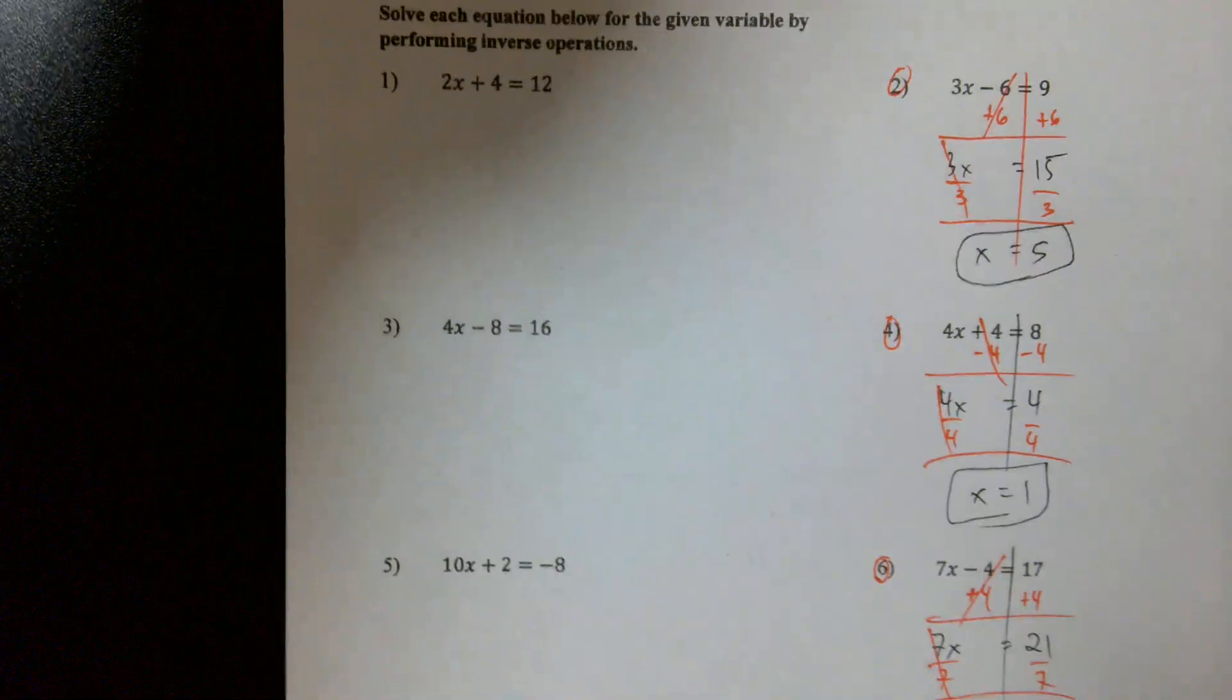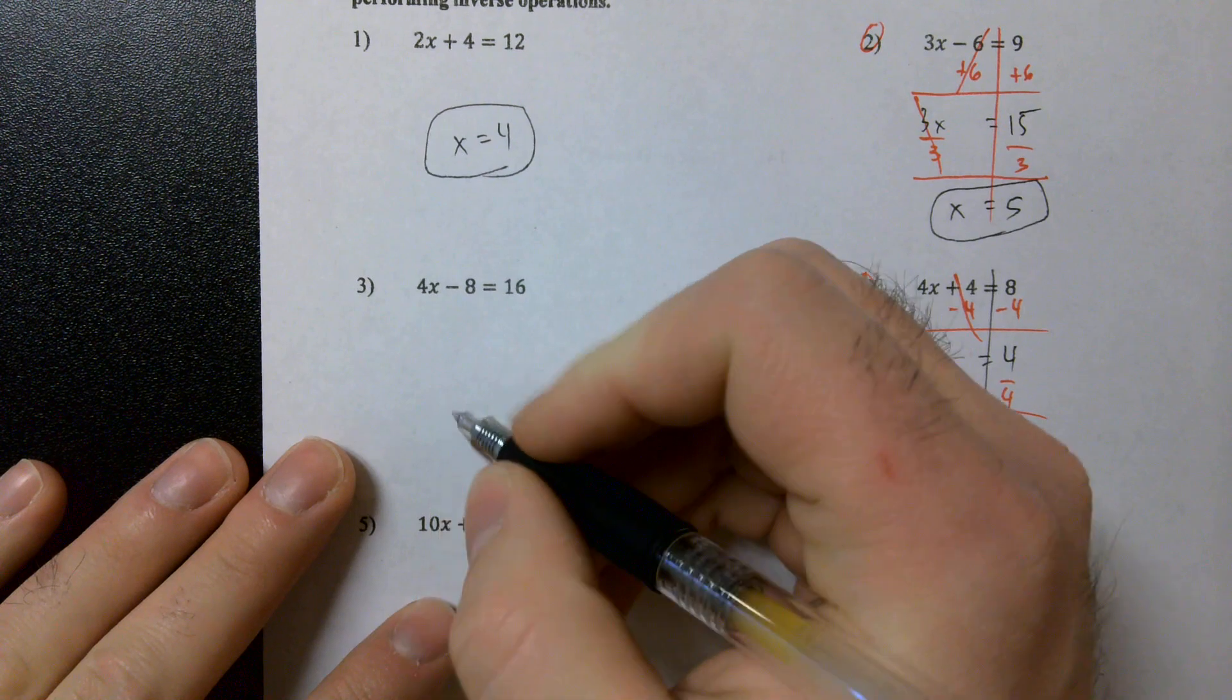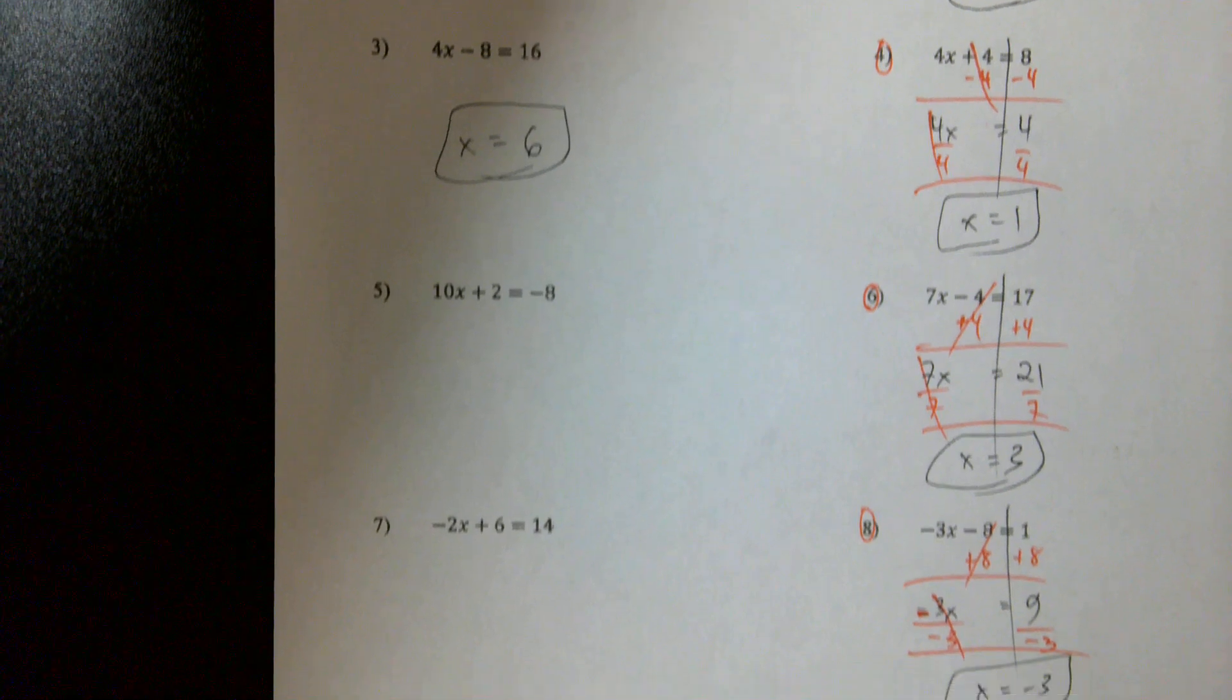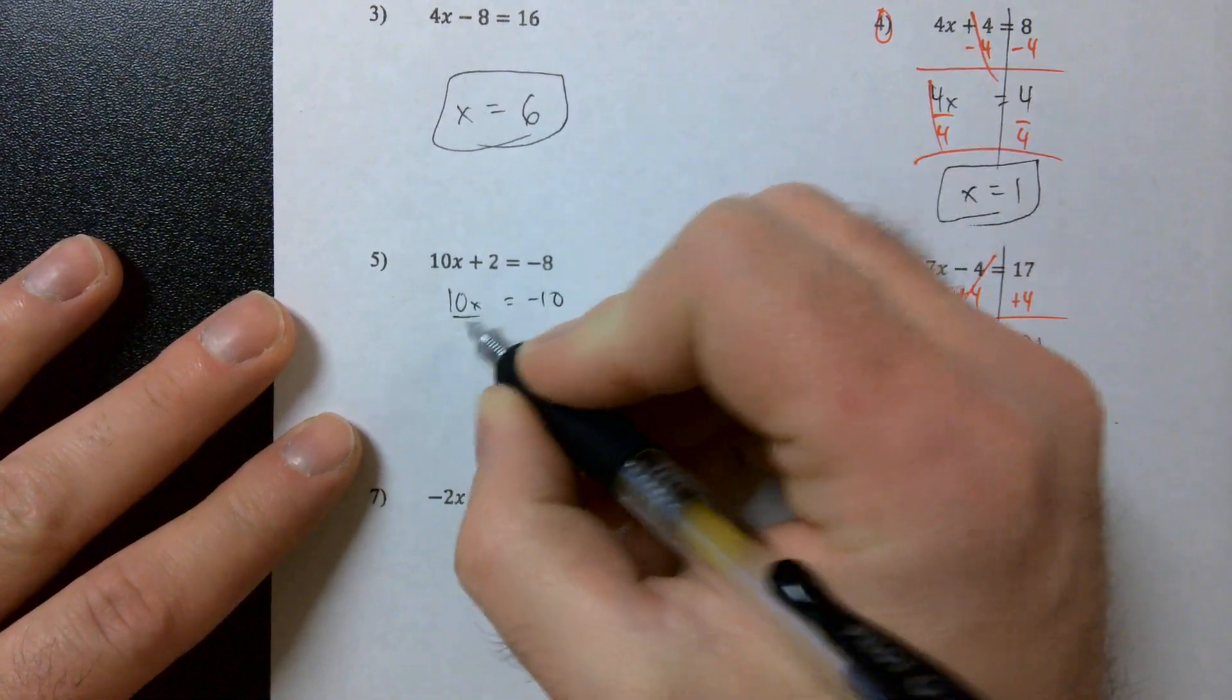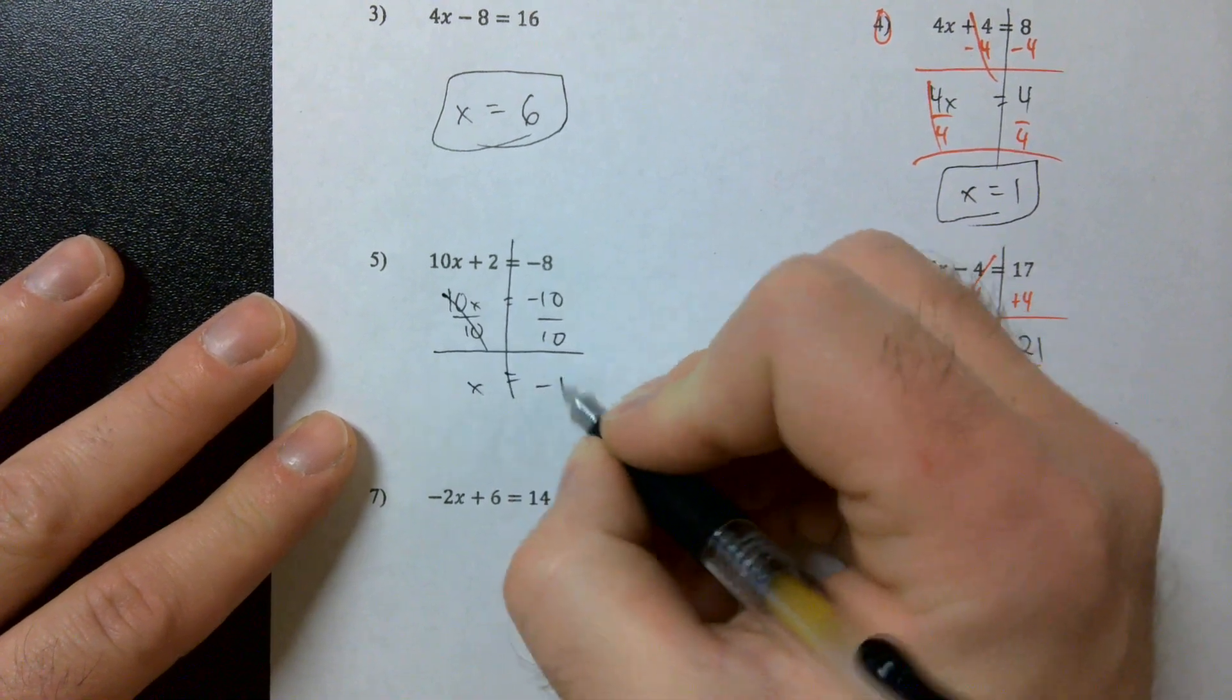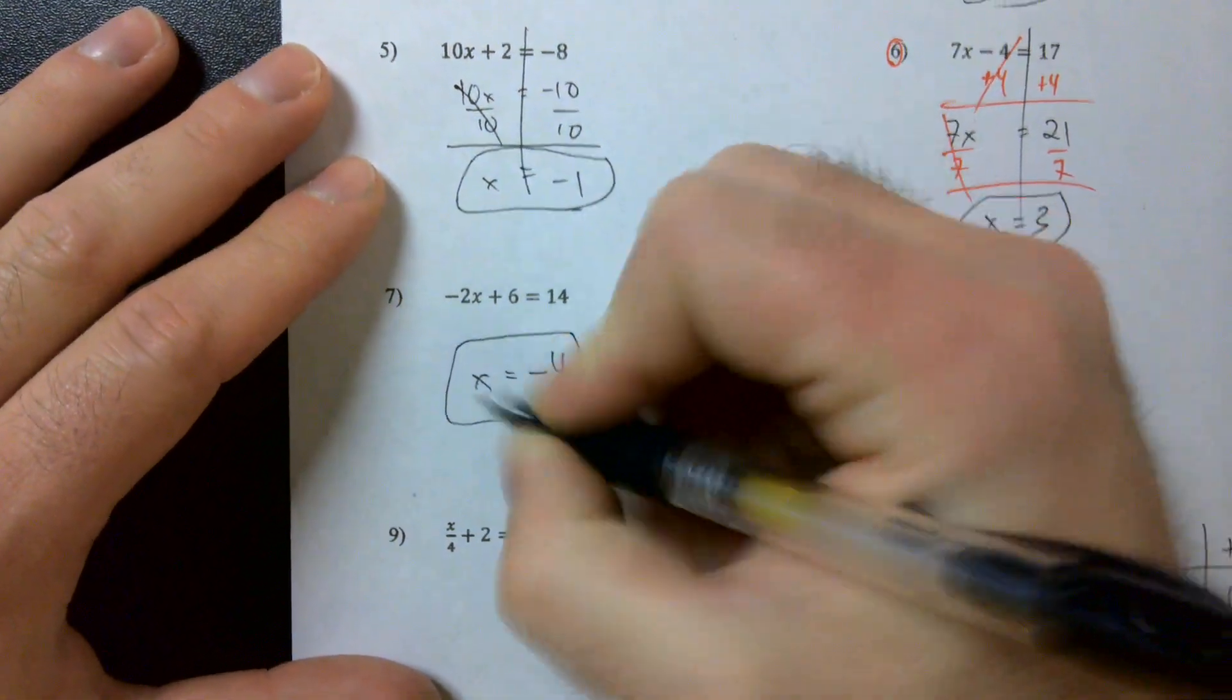Just so we can review the answers here. What did you guys get for number one? x equals four. Very nice. Number three, we got x equals six. Negative one, that's right, because we're going to end up with 10x equals negative 10. And a negative divided by a positive gives me a negative. Great job. What about number seven?